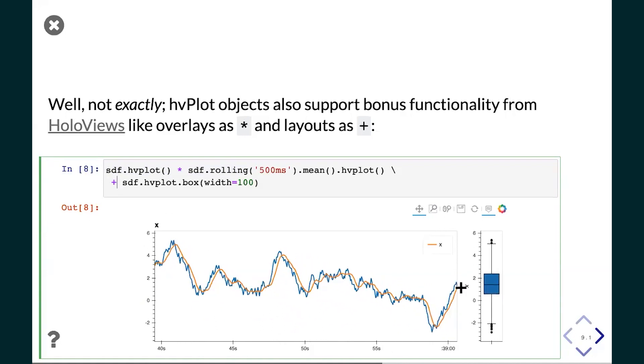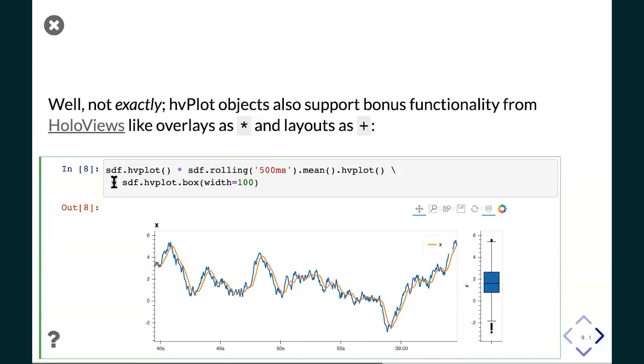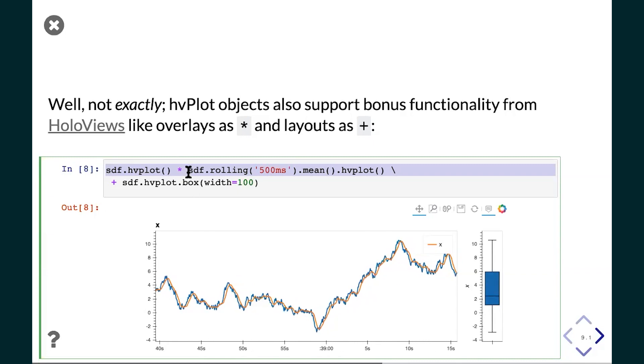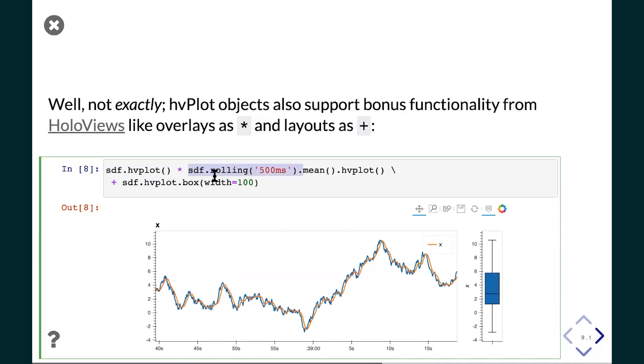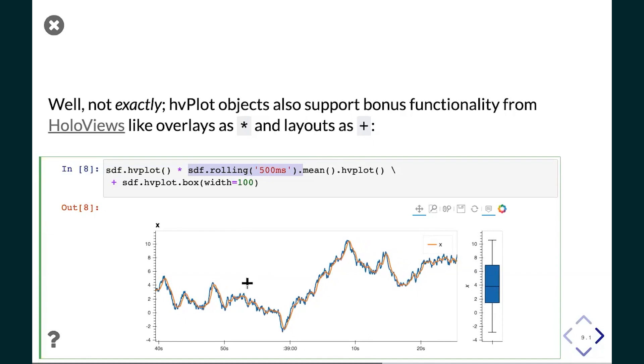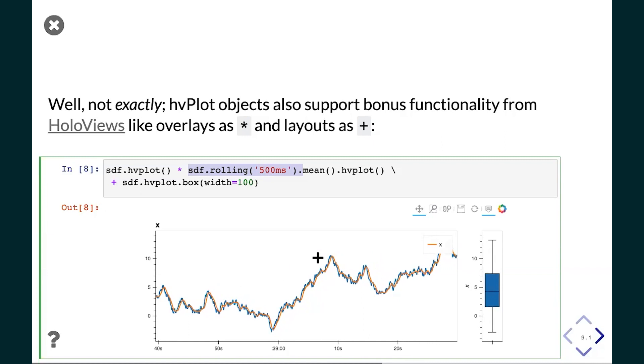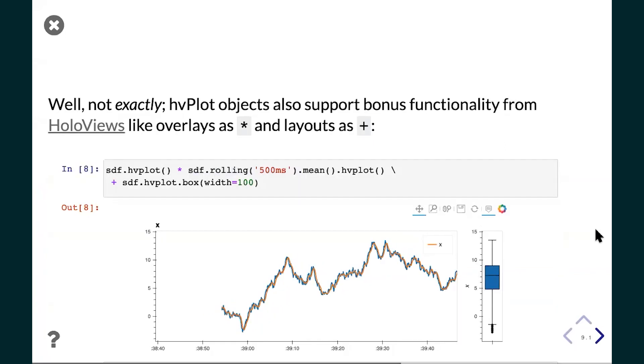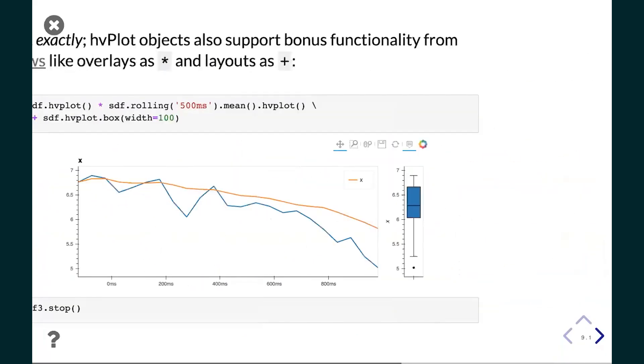I said this was exactly what you'd expect. This actually has a little bit more functionality. hvplot is like pandas.plot, but it adds additional things that are derived from a library called HoloViews. HoloViews supports star and plus operators, and those do overlays and layout, respectively. So here, what we're plotting is on the right we're plotting a box plot, and we're laying it out next to these two plots that are overlaid with each other. So we have the cumulative random value here in blue, and then we've overlaid a rolling mean of that same value in orange.